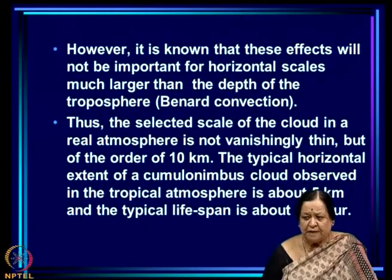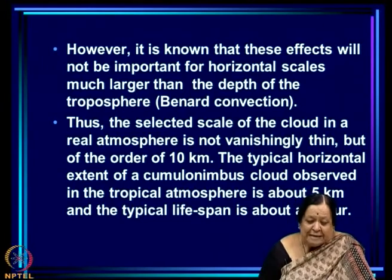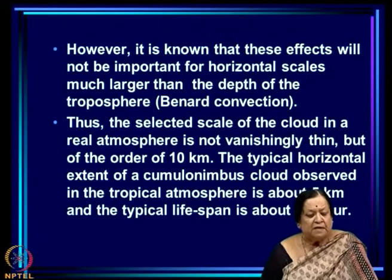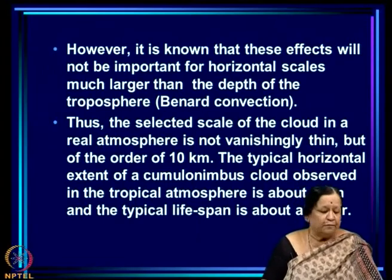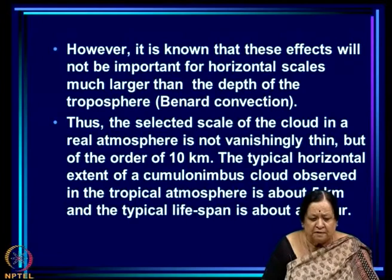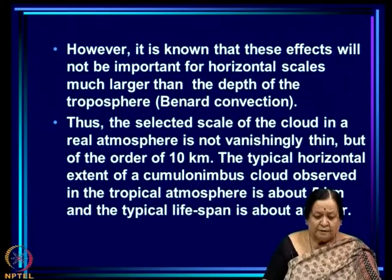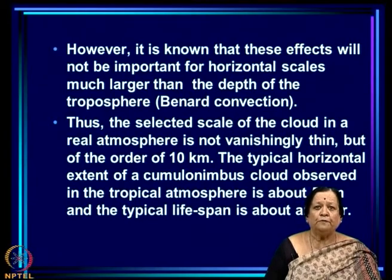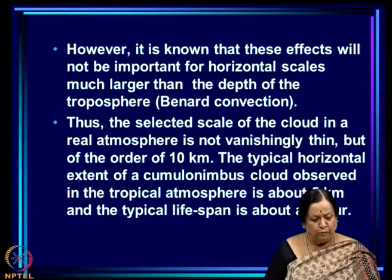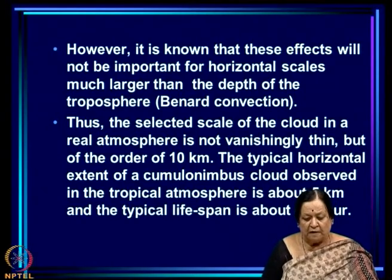So on one hand, in the inviscid problem it is the thinnest cloud that is selected; but when we consider entrainment in a real fluid, this has the largest impact on the thinnest clouds. This means not the thinnest but some scale larger than the thinnest will be selected for a real atmosphere. These effects will not be important for horizontal scales much larger than the depth of the troposphere. The selected scale of the cloud in the real atmosphere is of the order of 10 kilometers because the troposphere is of the order of 10 to 15 kilometers. The typical horizontal extent of a cumulonimbus cloud is about 5 kilometers, and its typical life span is about an hour.